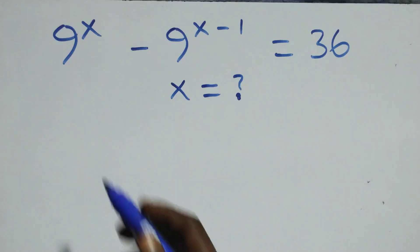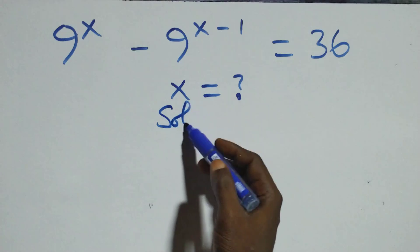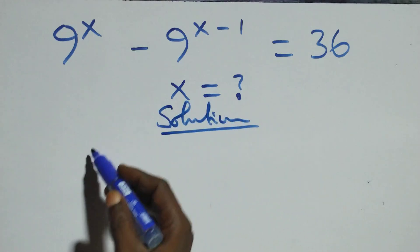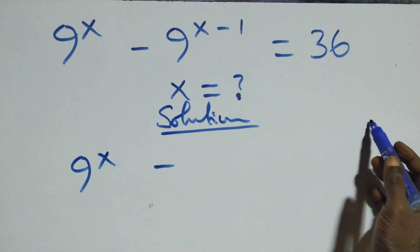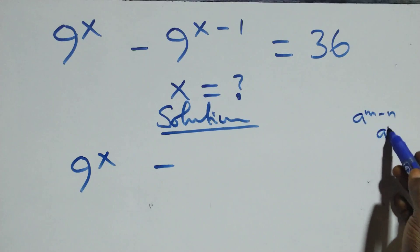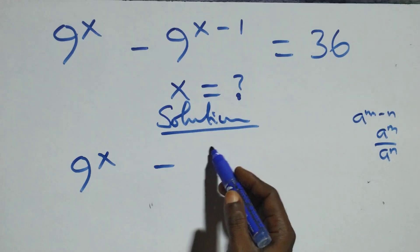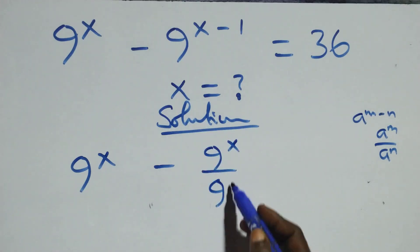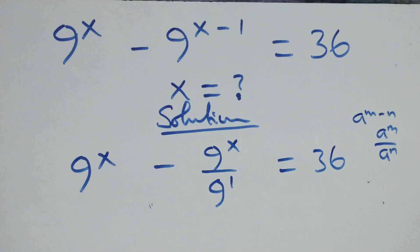Hello, you're welcome. How to solve this nice exponential equation. What we have here, you can write this as 9 raised to power x minus 1. Using the law a^(n-m) = a^n / a^m, this becomes 9 raised to power x over 9 raised to power 1, which is equal to 36 on this side.